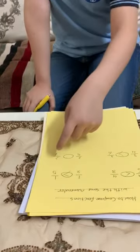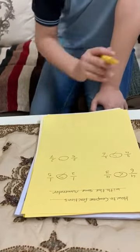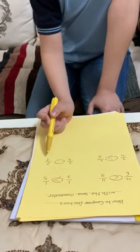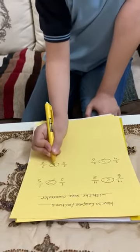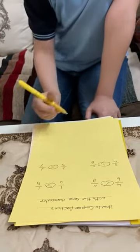2 over 5 and 2 over 7. 2 and 2 is equal numerator. And 7 is bigger than 5, so 2 over 5 is the bigger numerator.